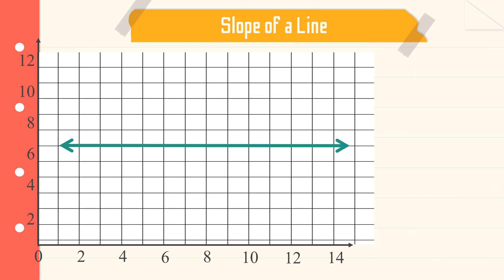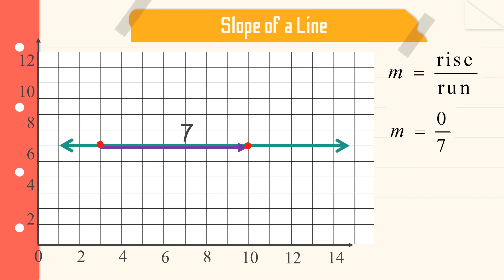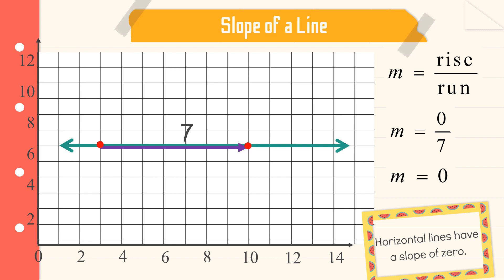For the third example, we have a horizontal line. Again, we pick two points. If we count the rise — the change in y-coordinates — it is zero, because they have the same y-coordinates. And if we count the change in x, we have seven. So the slope is zero over seven, and zero divided by any number gives us zero. Definitely, when we have a horizontal line, the slope is always equal to zero.